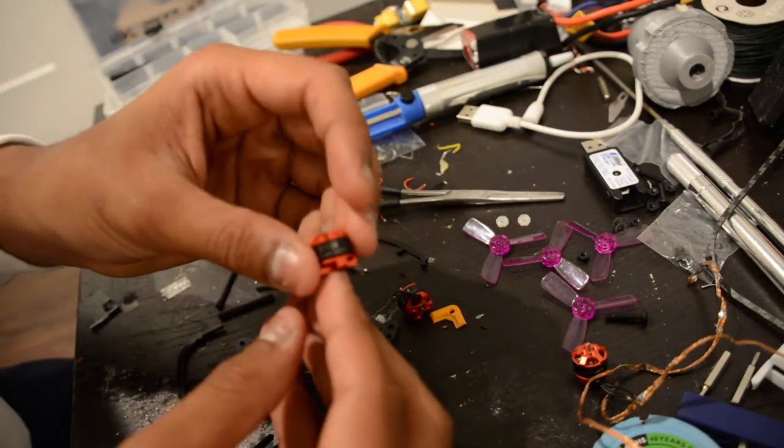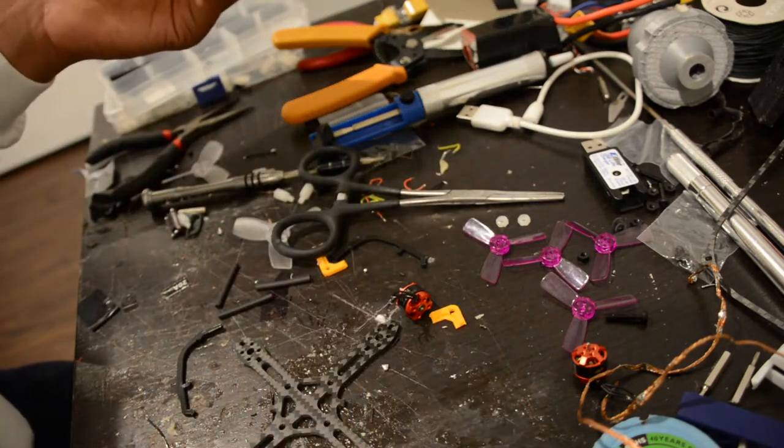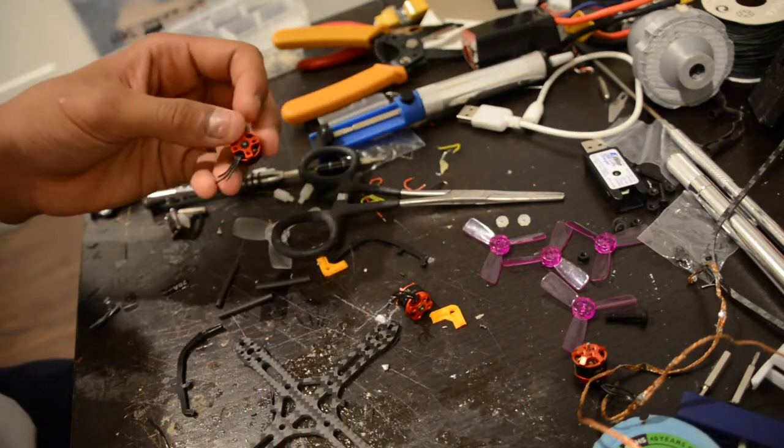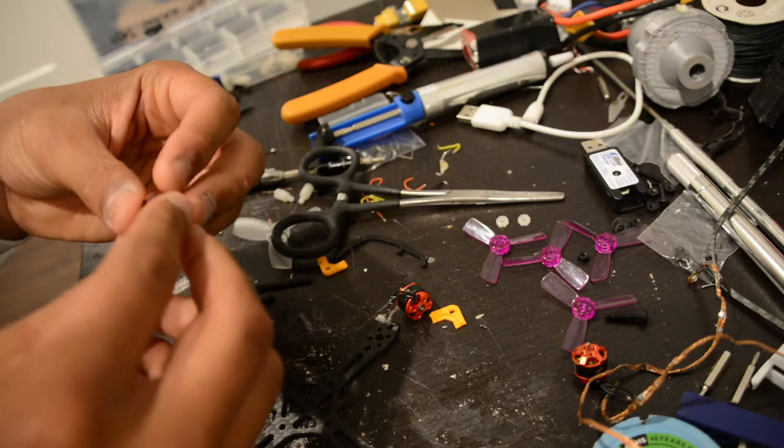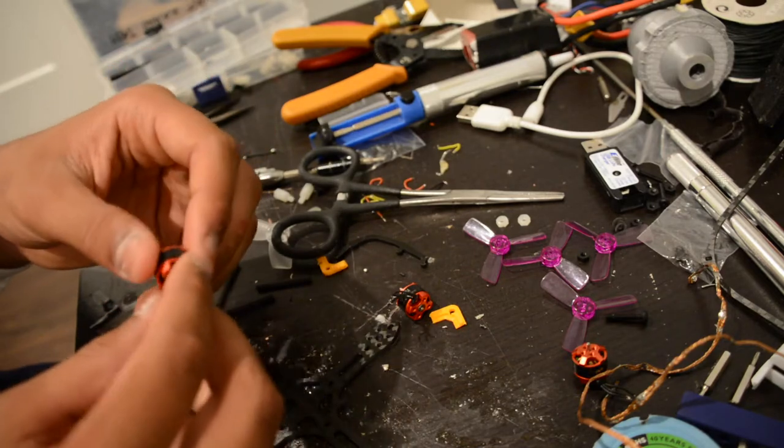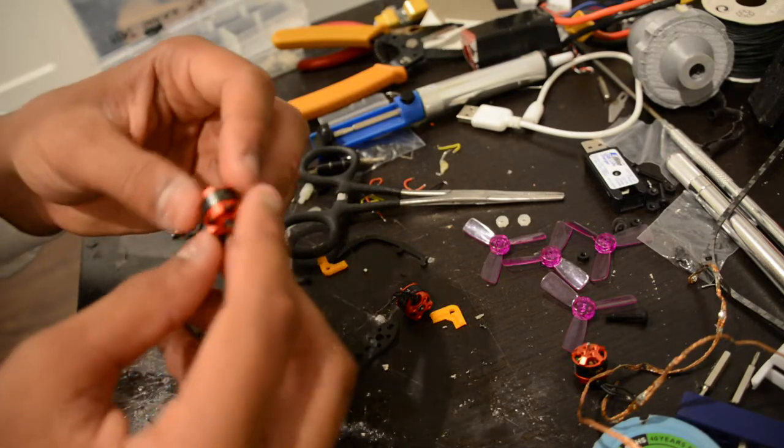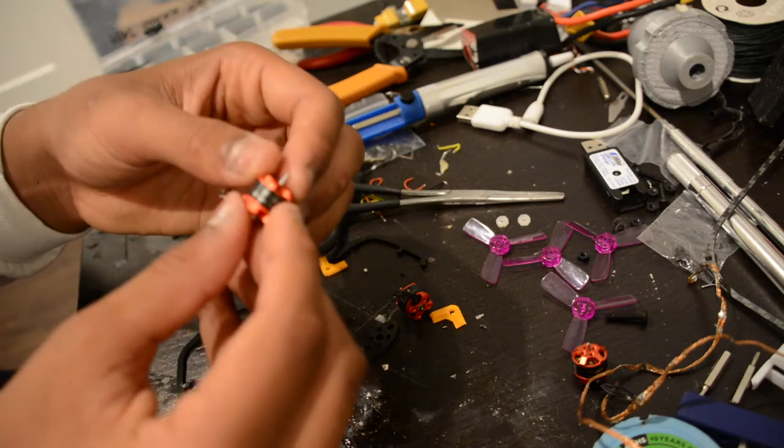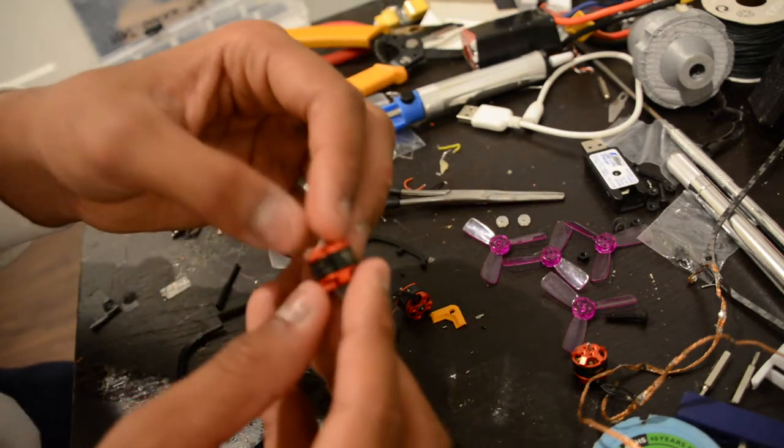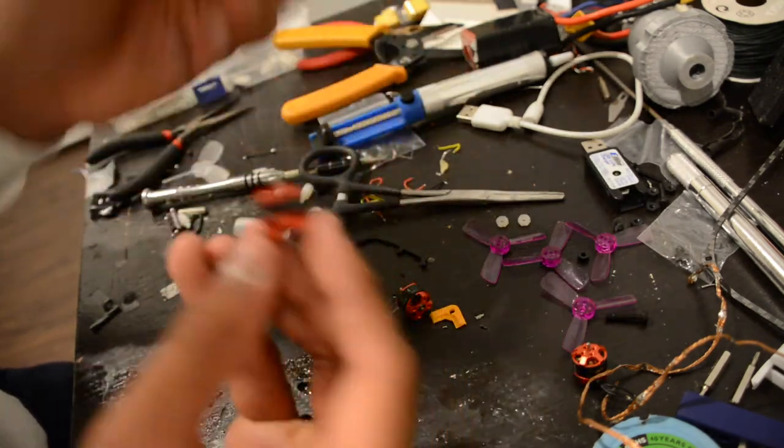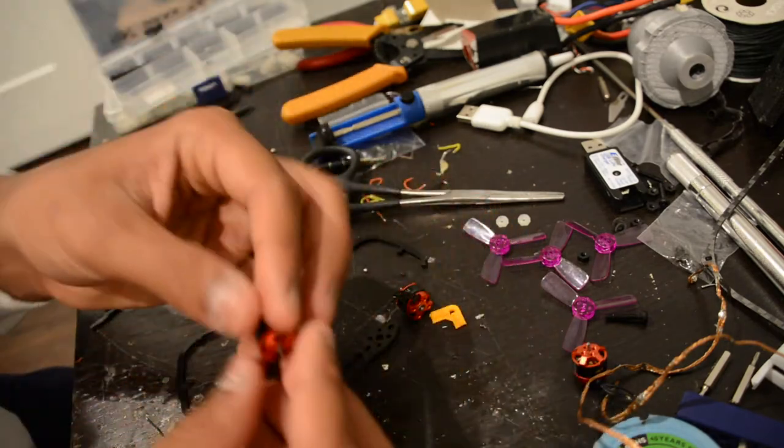So, I don't quite have everything I need just yet. I have a 10 amp 4-in-1 2-3s capable ESC coming in, but right now I'm going with these 1104 7500 kV motors that I just found on Amazon for I think 30 bucks for a set of four, so it's a pretty good deal.